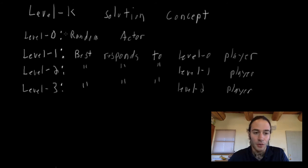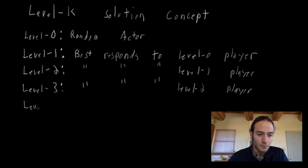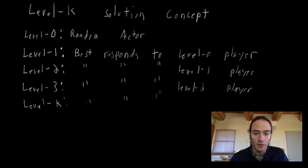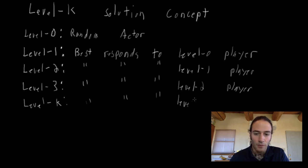So this rabbit hole can go down indefinitely. And we get this idea that a level K player best responds to a level K minus one player.